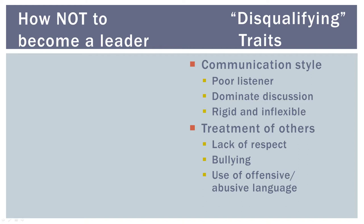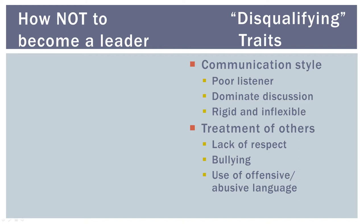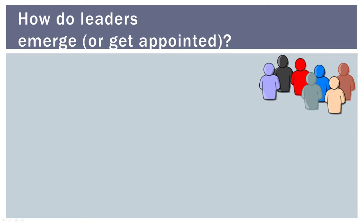So, why do some dominant, rigid, inflexible, disrespectful, bullying, and cursing individuals still become leaders? That leads us to the next concept—how leaders emerge or get appointed in a group.